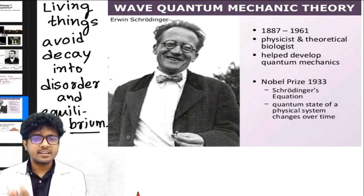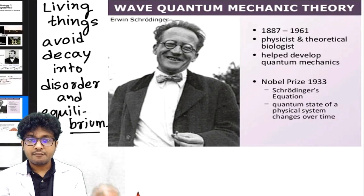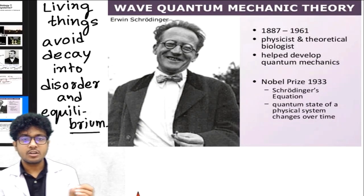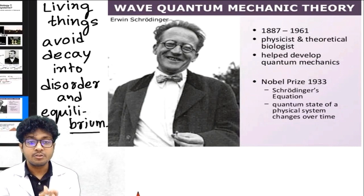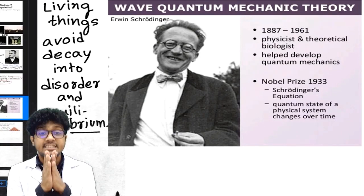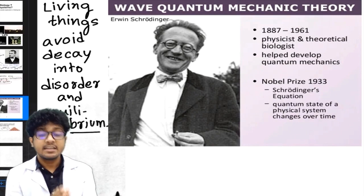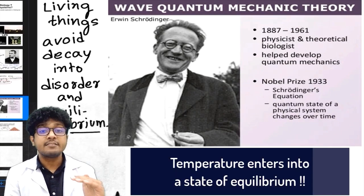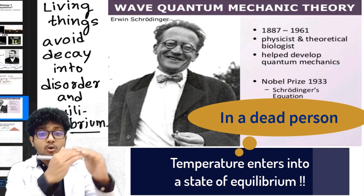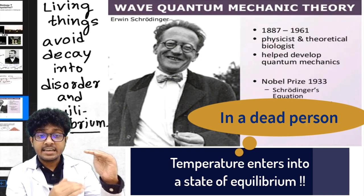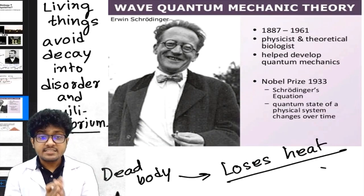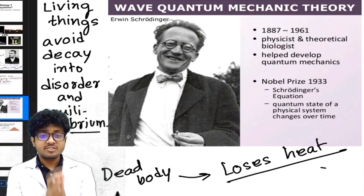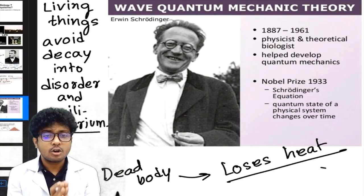Erwin Schrödinger defined life as: living things avoid decay into disorder and equilibrium. Every non-living matter in the universe enters equilibrium. A dead person cannot maintain body temperature at 37 degrees Celsius; slowly the temperature decays and reaches equilibrium with the surroundings. This can be explained by a term called entropy, which comes from the second law of thermodynamics.